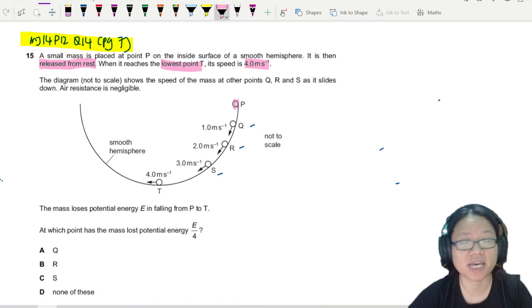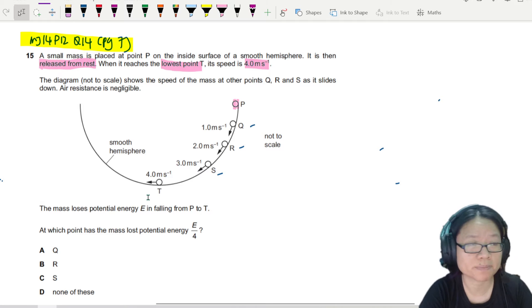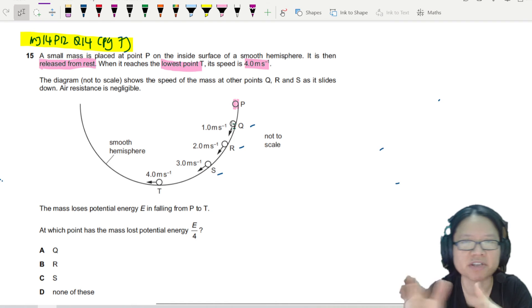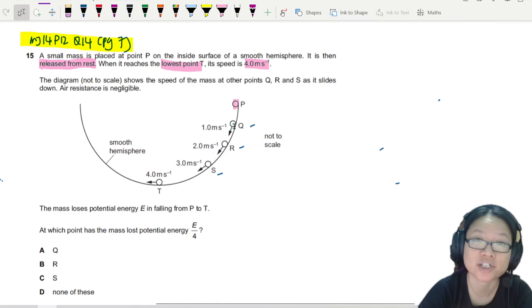Alright, so we can see a gain in kinetic energy happening here from P all the way to T. The diagram is not to scale. It shows the speed at other points QRS. So basically, don't take the distance as any given information, just the relative positions. And air resistance is negligible.